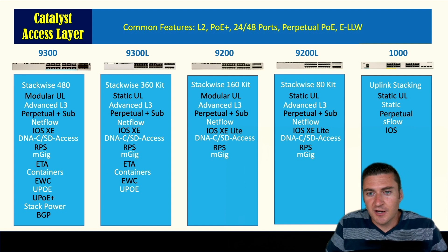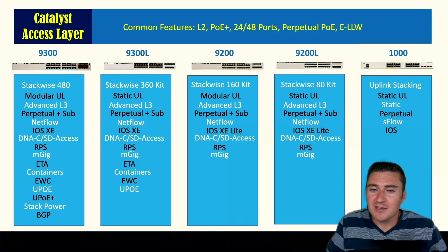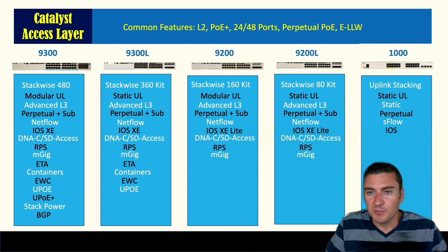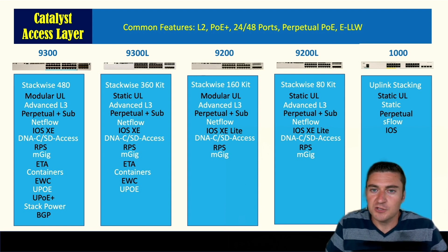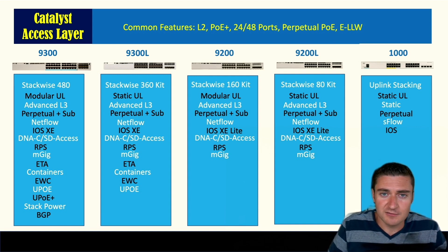The last feature to mention is BGP. While you don't typically run BGP at the access layer, sometimes these switches are used as a Swiss army knife with direct internet connectivity. If you need BGP, only the 9300 supports it — not the 9300L and obviously none of the other switches in this lineup.